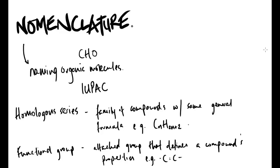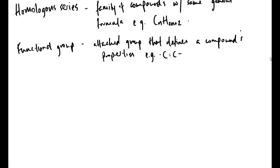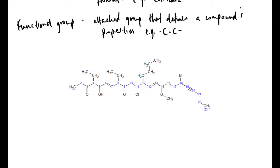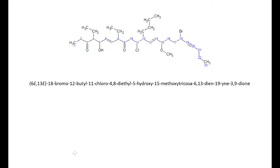The aim of nomenclature is that if you have any molecule, you can name it following simple rules. For example, a complex molecule can be named something like 6E,13E-18-bromo-12-butyl-11-chloro-4,8-diethyl-5-hydroxy-15-methoxytricosa-6,13-diene-19-yne-3,9-diol — which you're never going to get in an exam, but the point is that following simple rules you could actually work out how to name it.